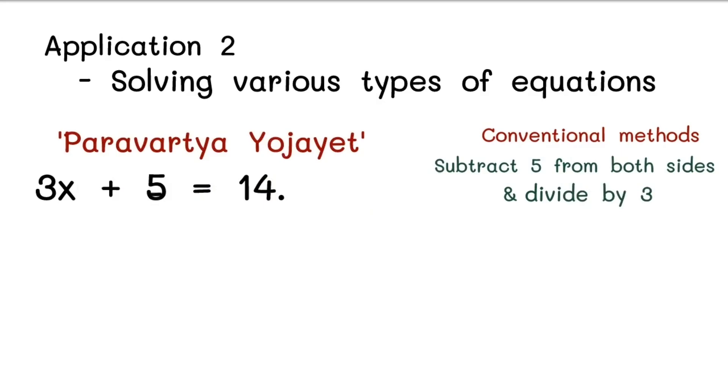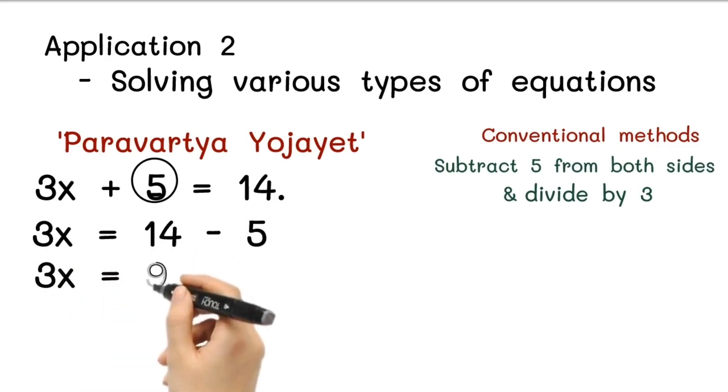First, we transpose the constant term to the other side of the equation, which is 5 in this case. This gives us 3x equals 14 minus 5, which simplifies to 3x equals 9.